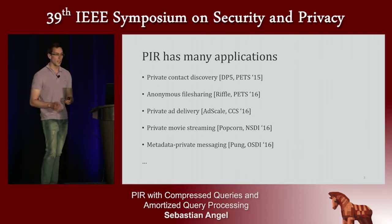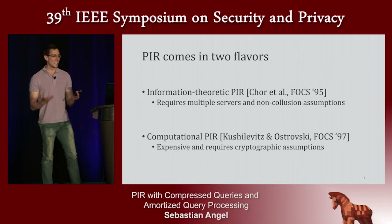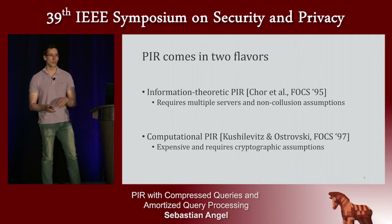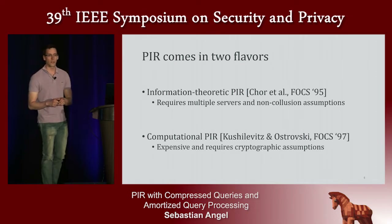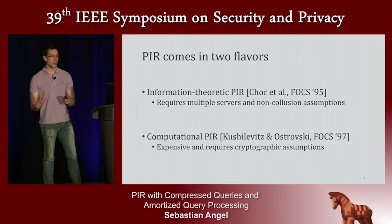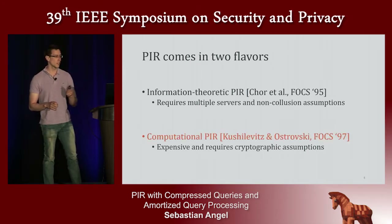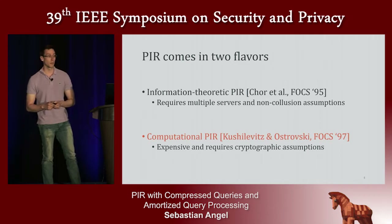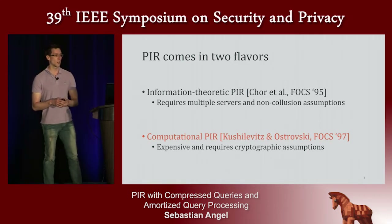PIR comes in two flavors. One is the information-theoretic flavor, which requires multiple servers that do not collude with each other. There's also the computational variant, which requires cryptographic assumptions and is more expensive, but doesn't require the non-collusion assumption. The computational variant is much easier to deploy because you don't have to make that assumption, so that's what I'm going to focus on.